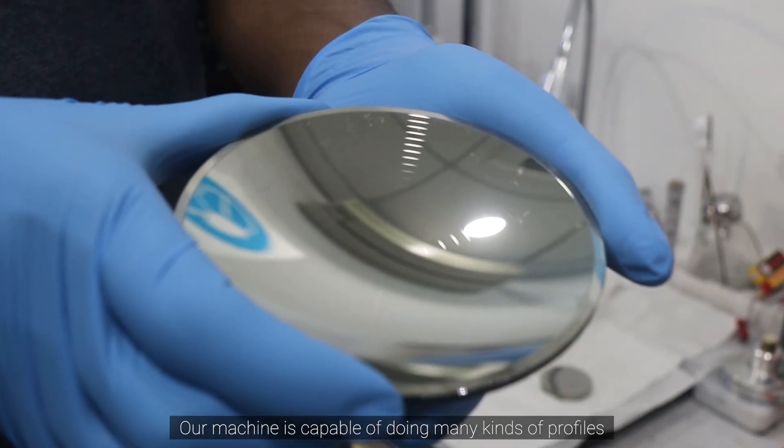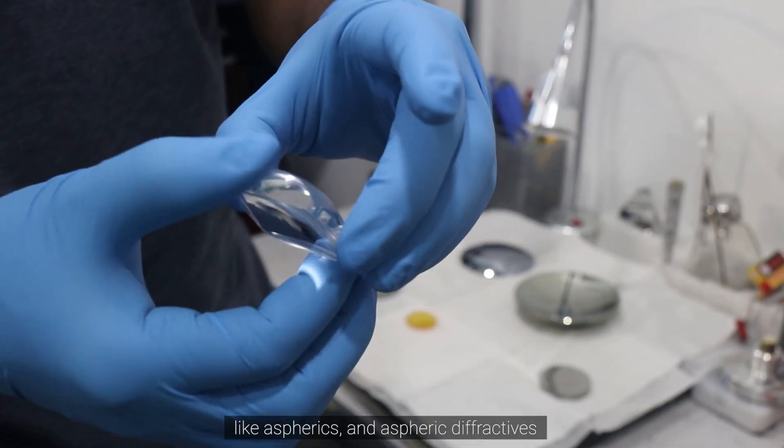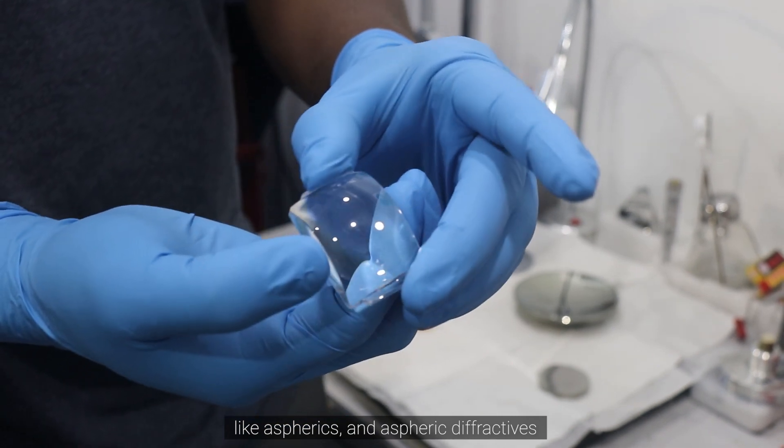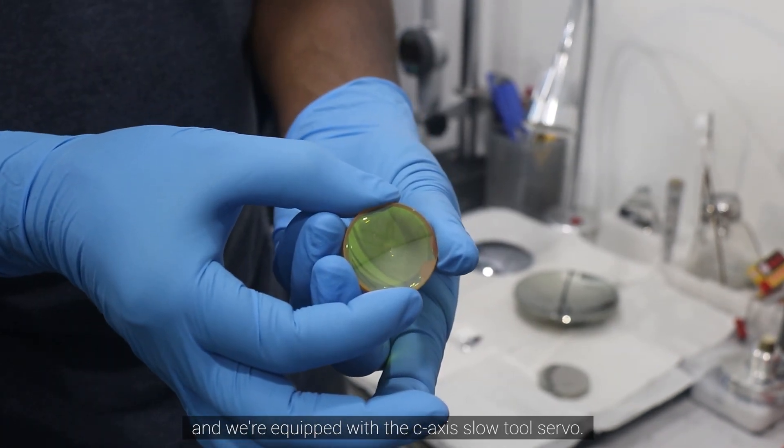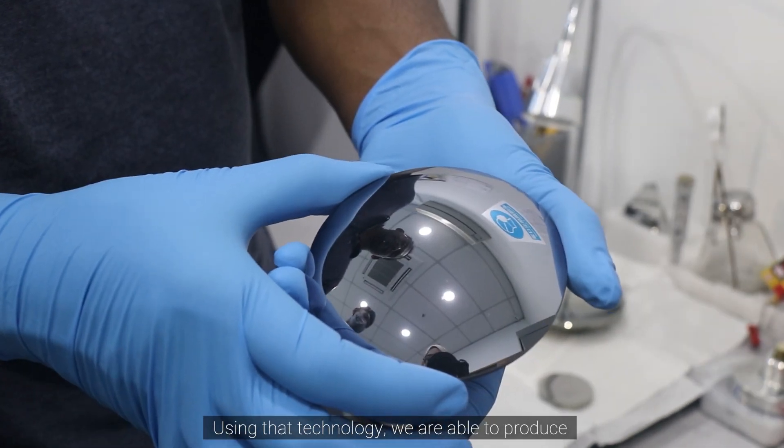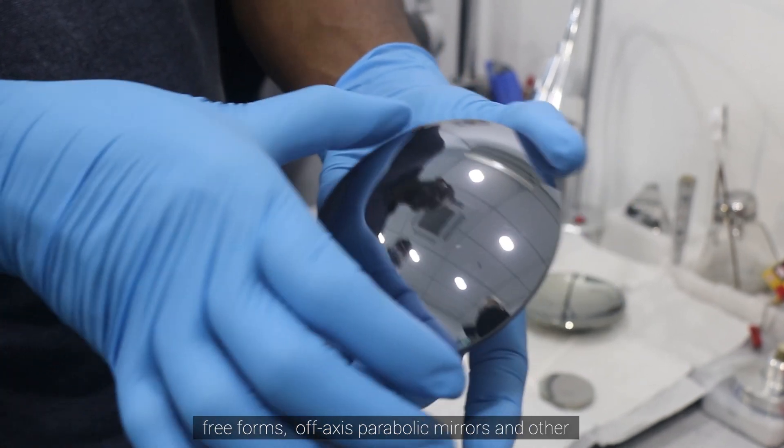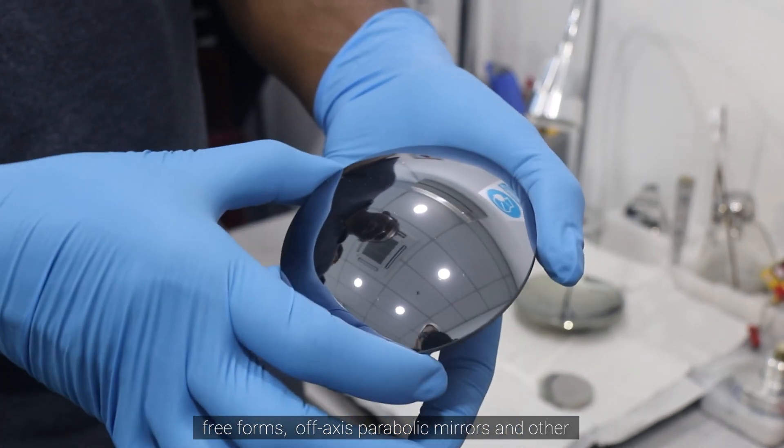Our machine is capable of using many kinds of profiles like aspherics, aspheric diffractives, and is equipped with the C-axis slow-tool servo. Using that technology, we can produce freeforms, paraboloids, ellipses, and all kinds of non-rotationally symmetric optics.